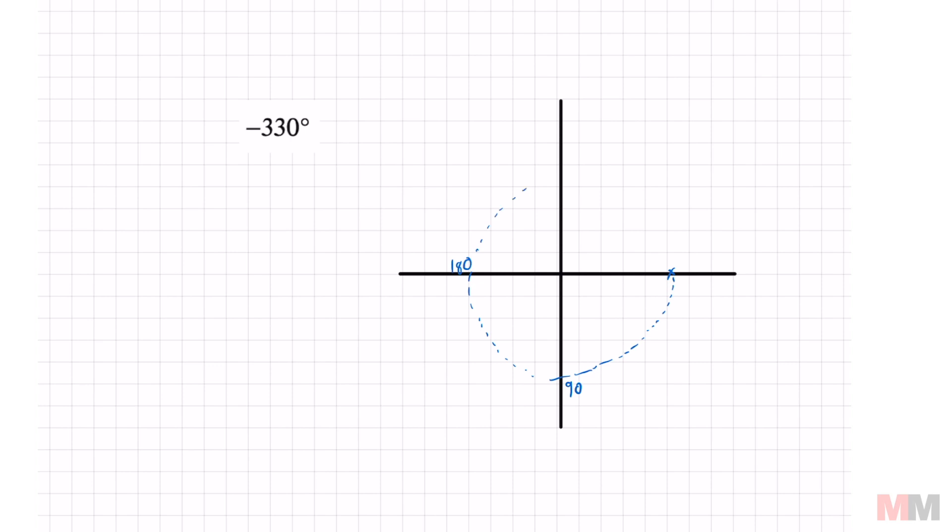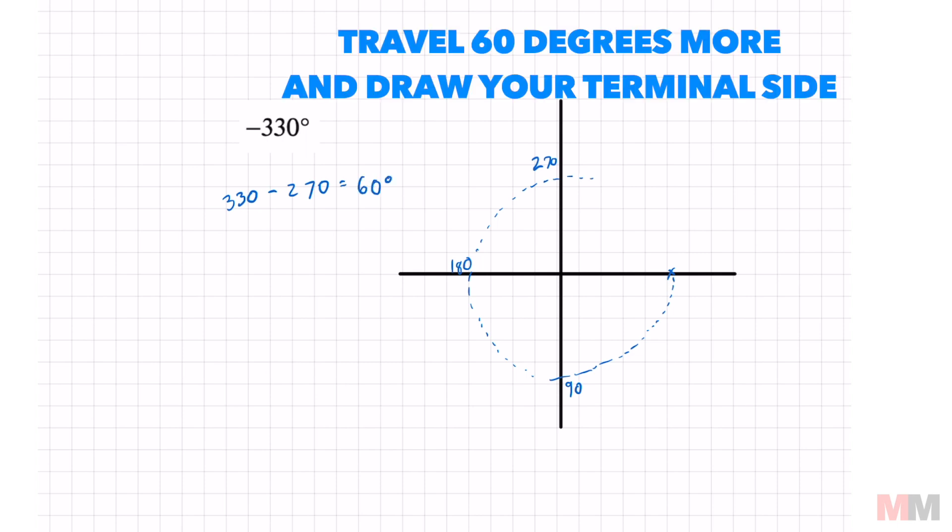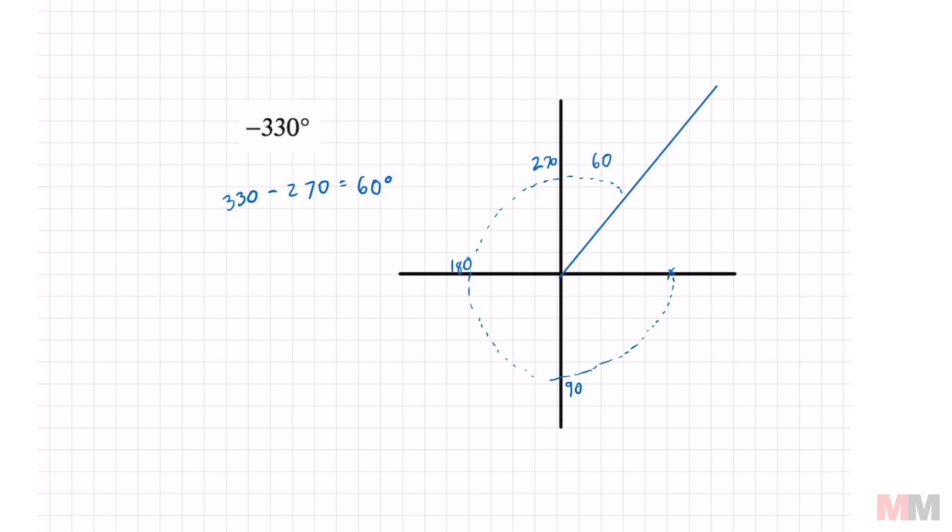and half a circle is 180. I had to keep going, and now I'm at 270. To figure out how far 270 is from 330, I can just subtract 330 minus 270, and I get 60 degrees. So I just have to travel 60 more degrees right here.